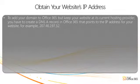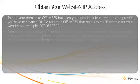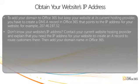To add your domain to Office 365 but keep your website at its current hosting provider, you have to create a DNS A record in Office 365 that points to the IP address for your website. If you don't know your website's IP address, contact your current website's hosting provider and explain that you need the IP address for your website to create an A record to route customers there. Then add your domain name in Office 365.